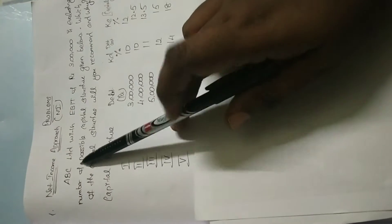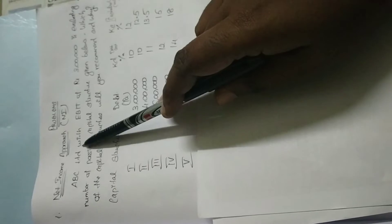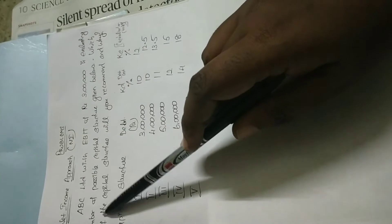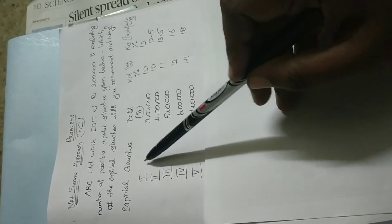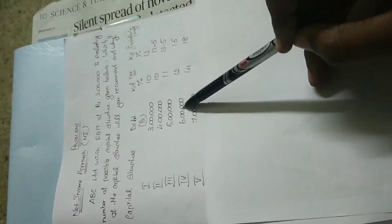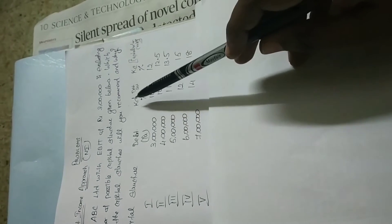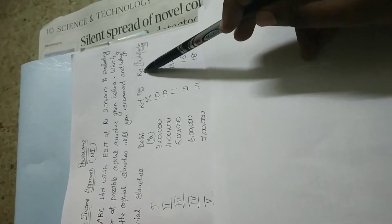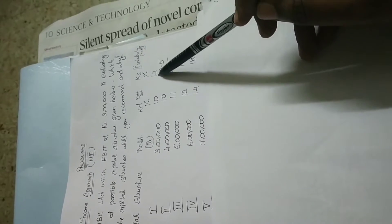Now we are going to see the problem for the net income approach. ABC Limited with earnings before interest and tax of Rs. 3 lakh is evaluating a number of possible capital structures. The capital structures 1 through 5 have market values of debt of 3 lakh, 4 lakh, 5 lakh, 6 lakh, and 7 lakh. The cost of debt (KD) percentages are 10, 10, 11, 12, and 14, and the equity capitalization rates (KE) are 12, 12.5, 13.5, 15, and 18 percent. Which capital structure will you recommend and why?